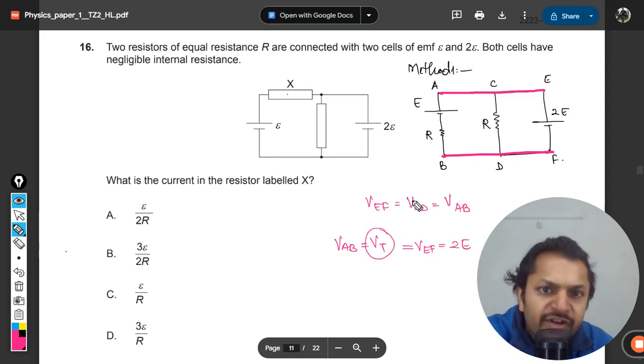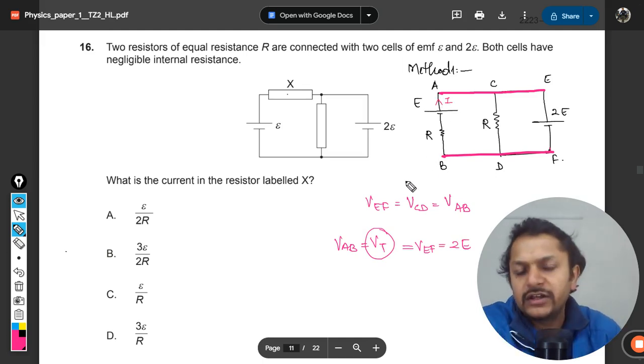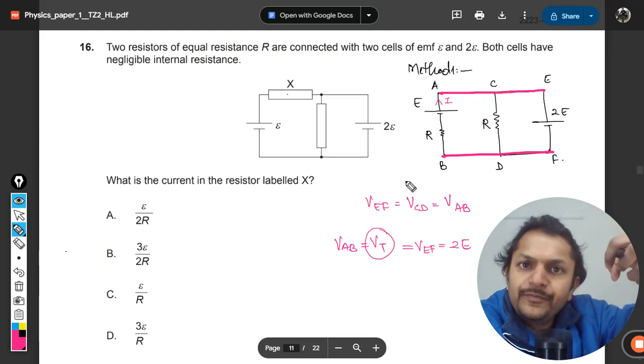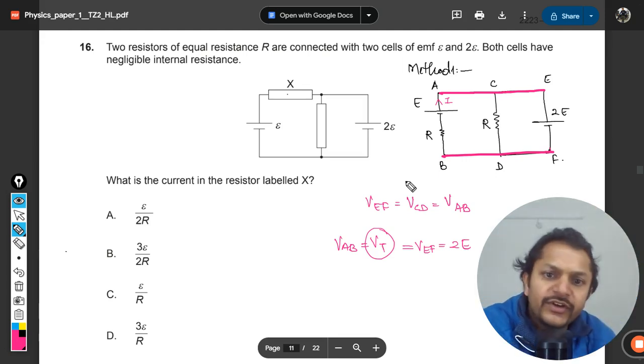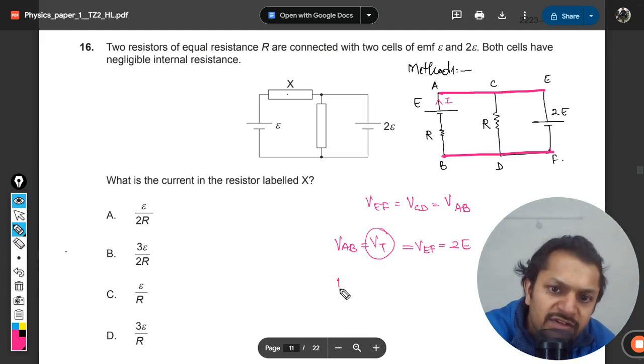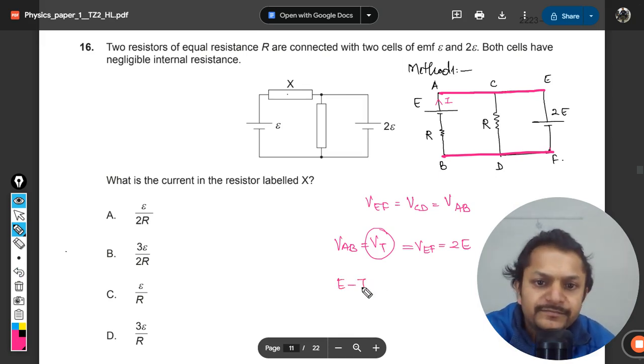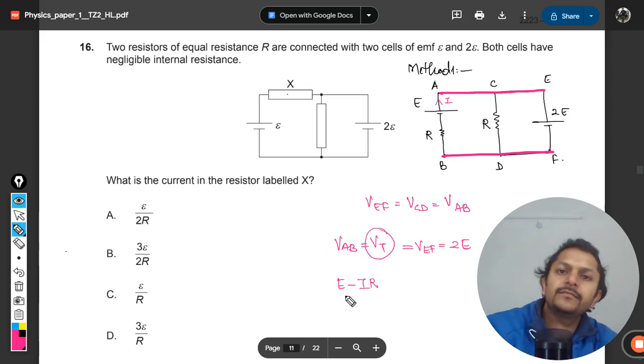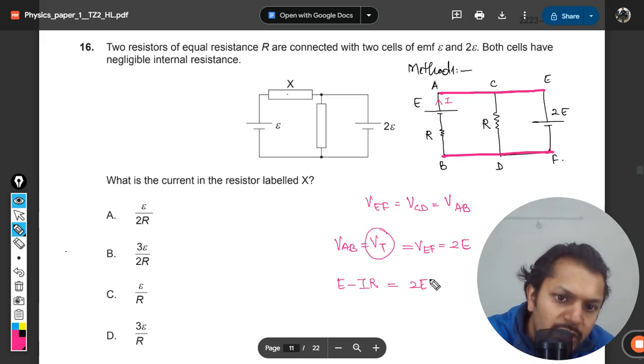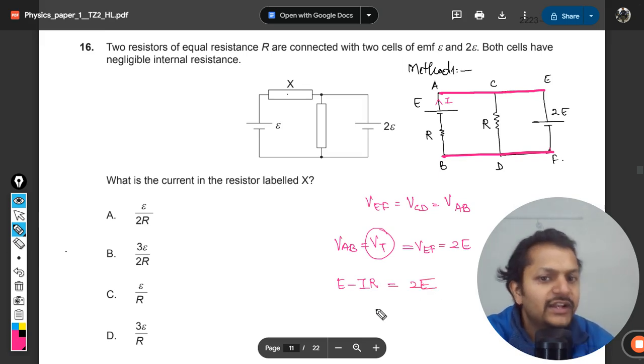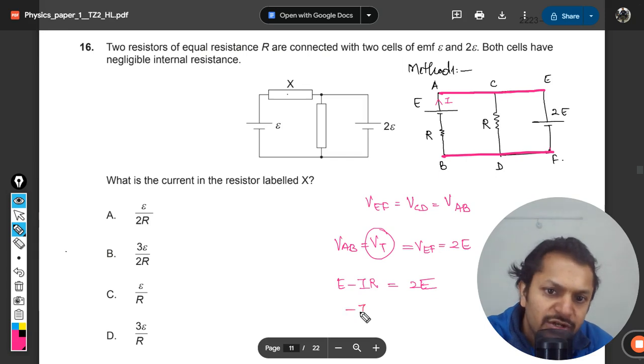The terminal potential difference across this, if we imagine the direction of current coming out of it, can be written as e minus ir. This terminal potential difference e minus ir equals 2e. Accordingly we can find the value of i, so negative ir equals e minus e.